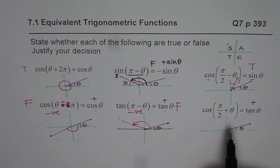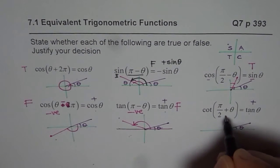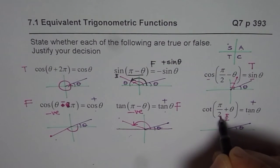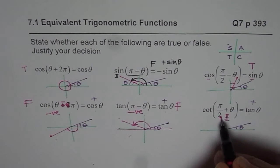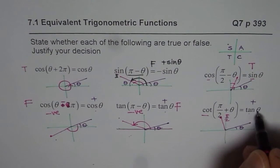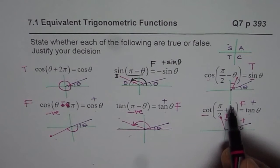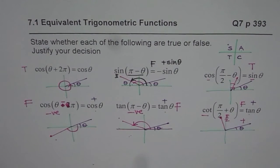Last one here is cotangent(π/2 + θ). Now that is π/2 for us. And plus theta means you land in quadrant 2. In quadrant 2, cotangent is negative. But tan θ here is positive. So this statement is also false. So it should be minus tan θ. Do you get the point?